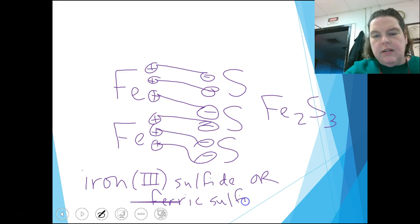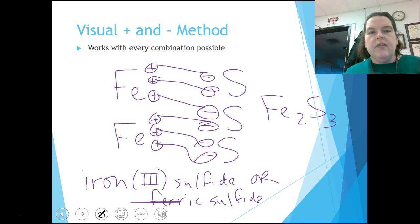Either one of those two names is absolutely correct. So that's the visual plus and minus method. And you can see it really works. It works for D blocks. It works for the representative elements. It works for everything, including polyatomic ions.